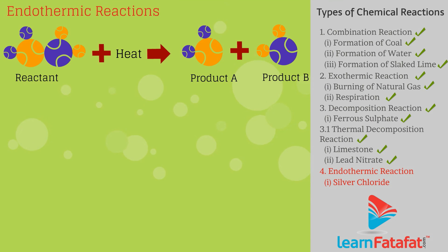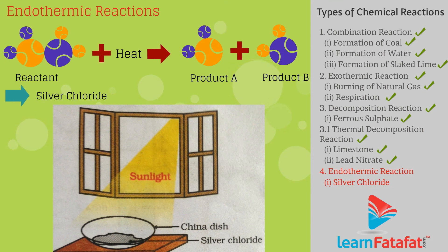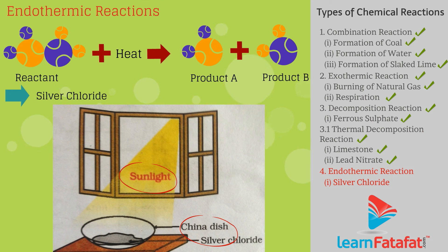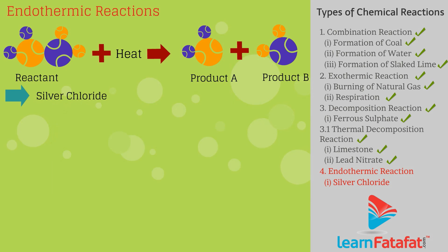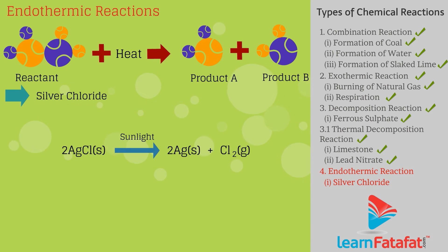Example 2: Take 2g of silver chloride in a china dish. Note down the white colour of silver chloride. Place the china dish in sunlight for some time. Notice that white silver chloride turns grey in sunlight. This reaction is used in black and white photography: 2AgCl → 2Ag + Cl₂ (in the presence of light).